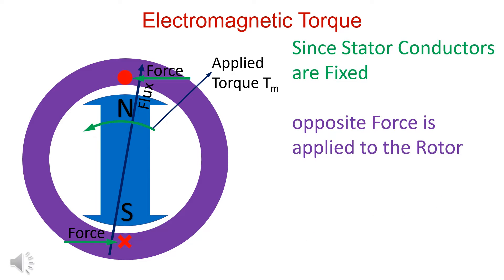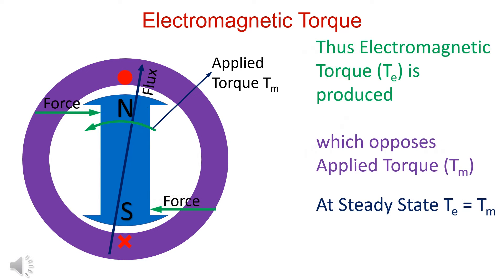Since the stator conductors cannot move, opposite force is applied on the rotor. Thus, the electromagnetic torque Te is produced which opposes the applied torque Tm.